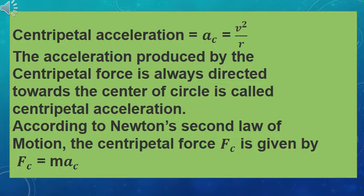Centripetal acceleration AC equals V squared over R. The acceleration produced by the centripetal force is always directed towards the center of the circle. This centripetal acceleration is what keeps the body moving in a circular path, and its direction towards the center is given by the acceleration produced by centripetal force.